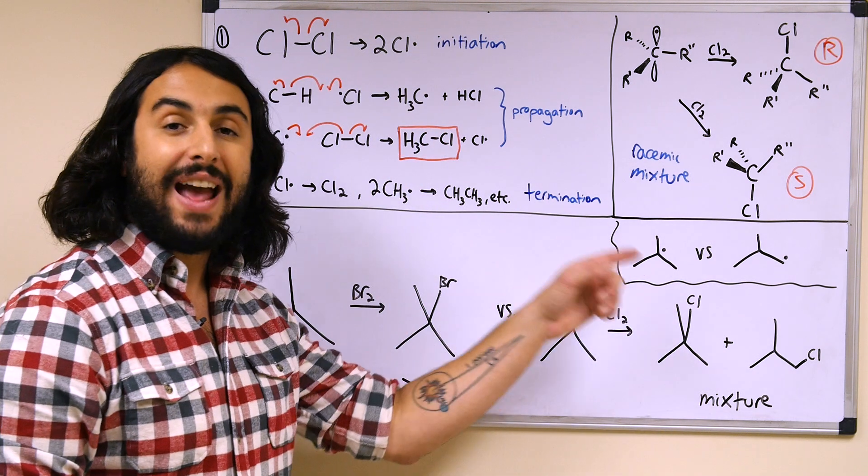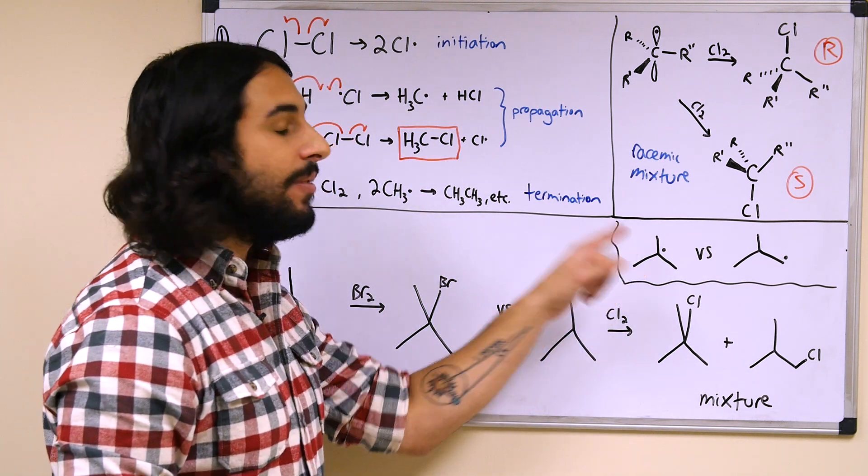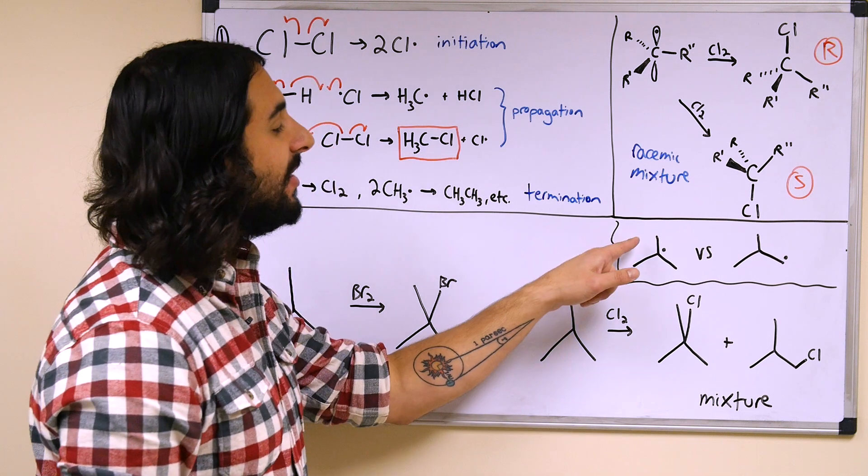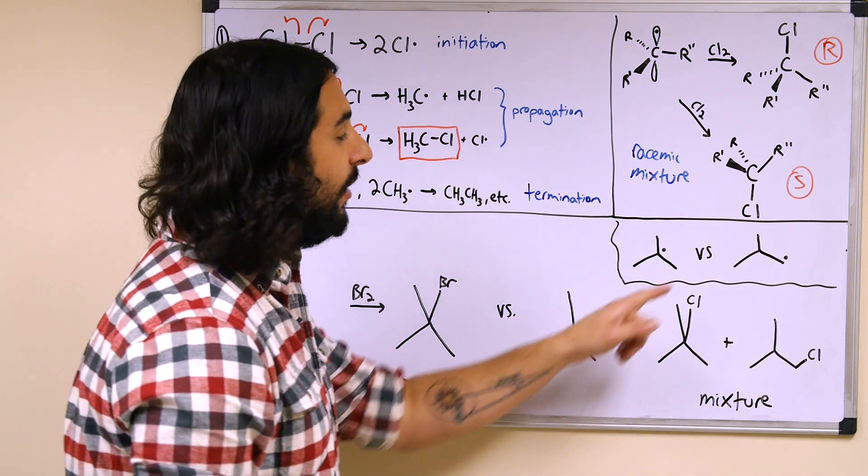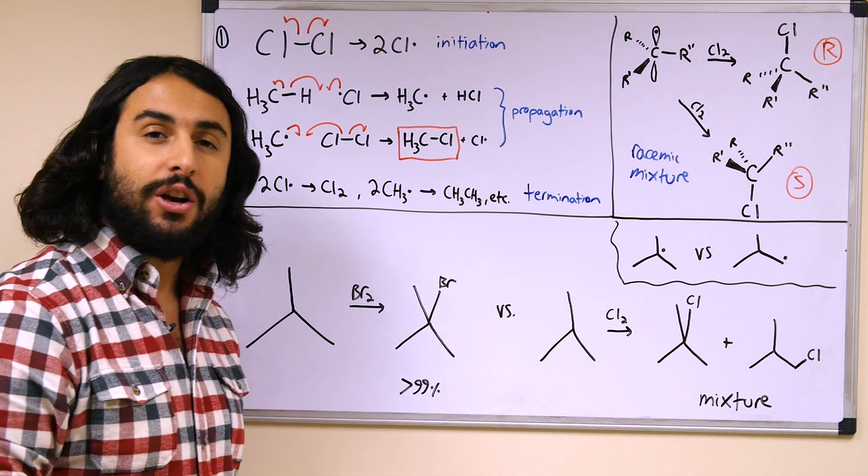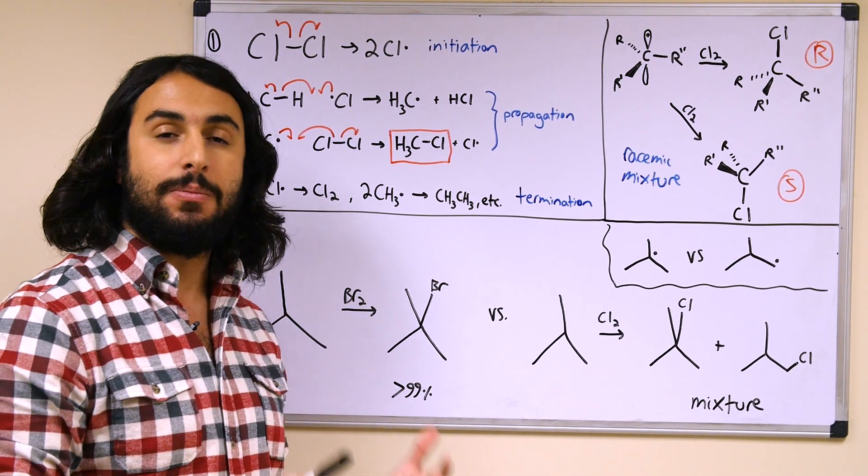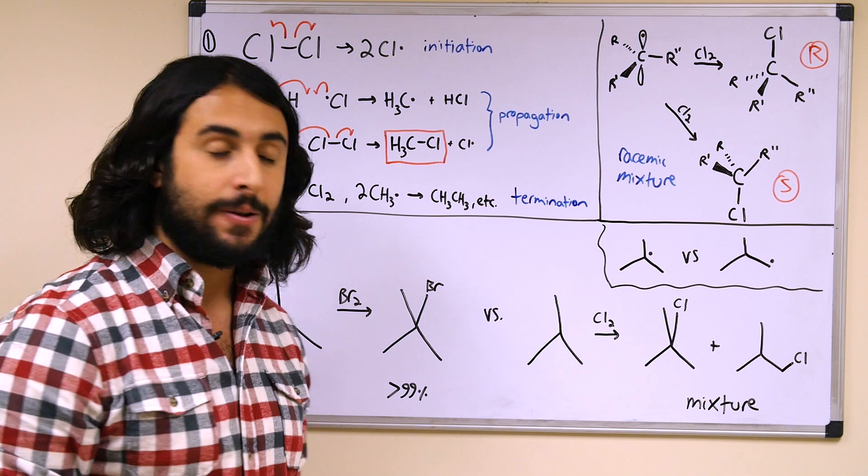Bromine isn't really going to go that way because of its enhanced stability due to its size. That means if it were much more frequently producing the tertiary alkyl radical intermediate.